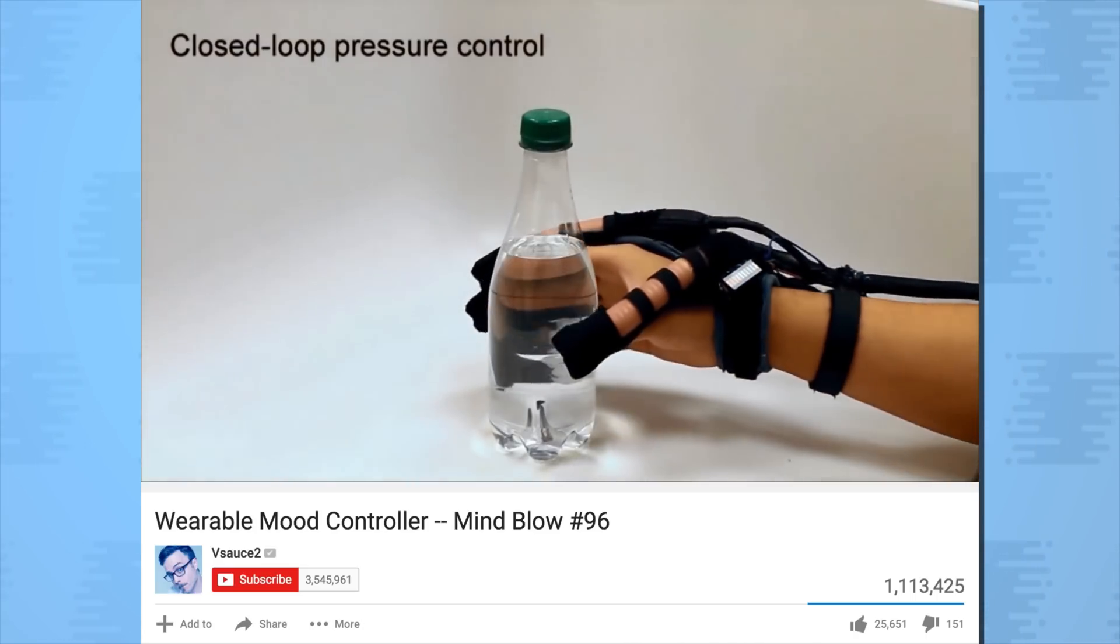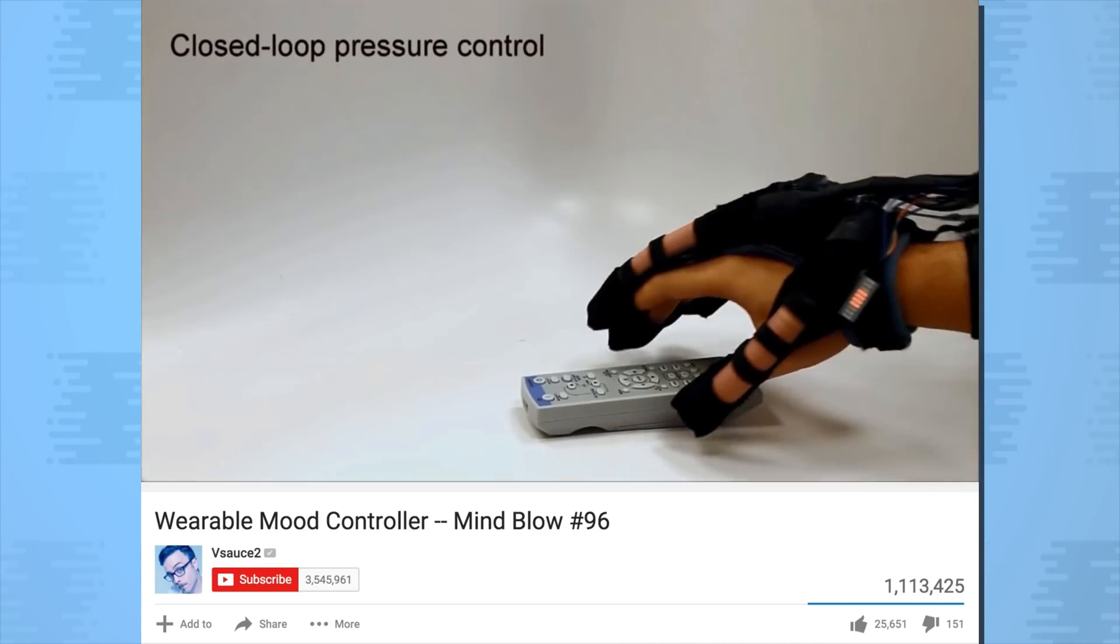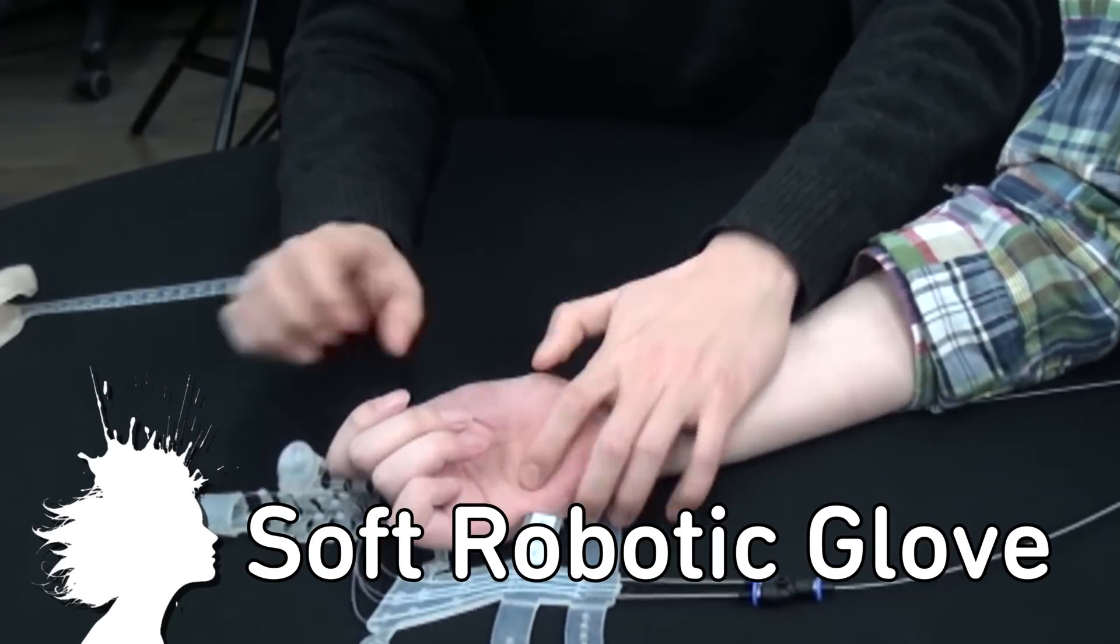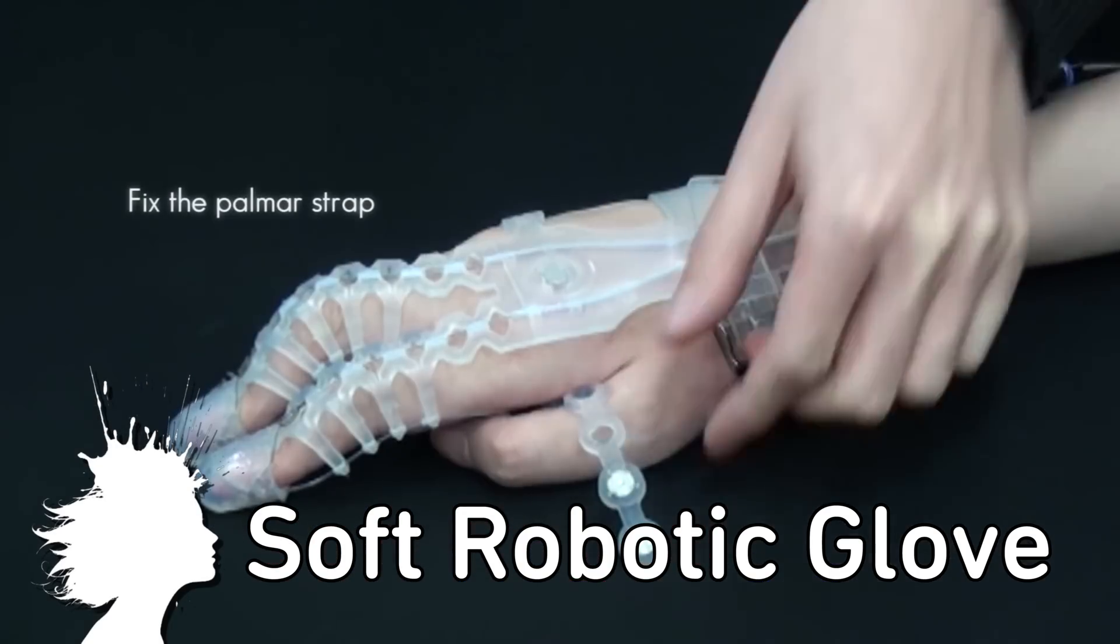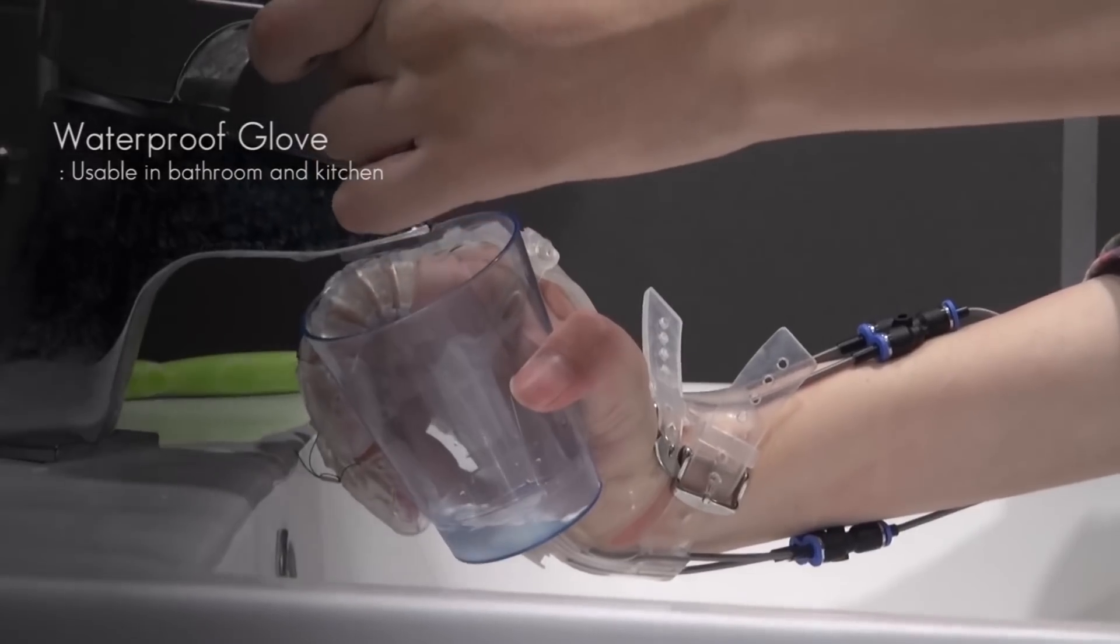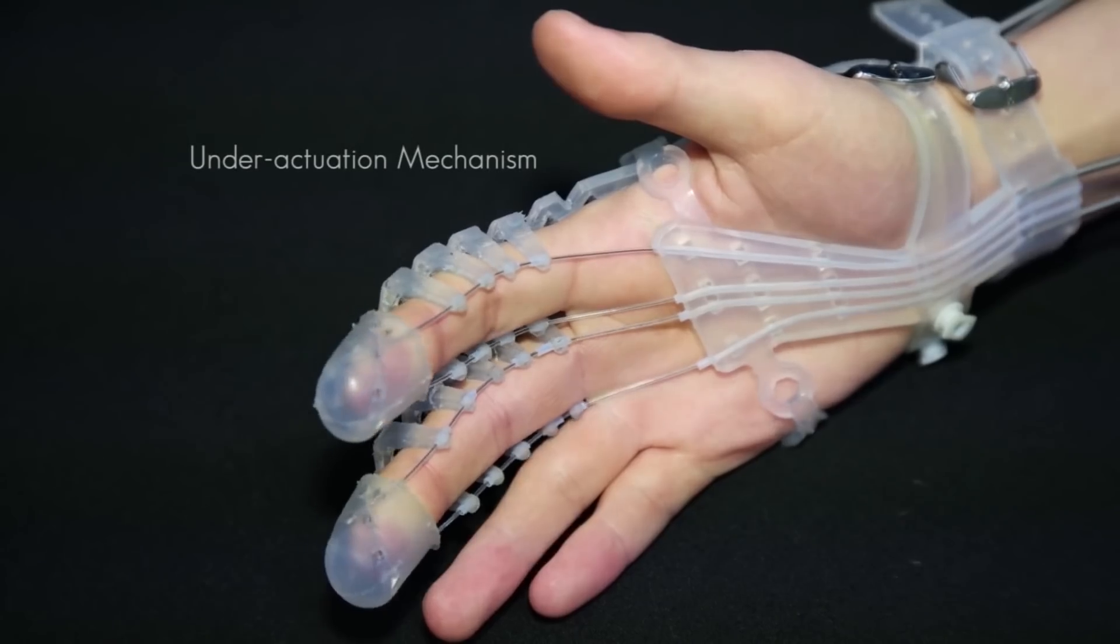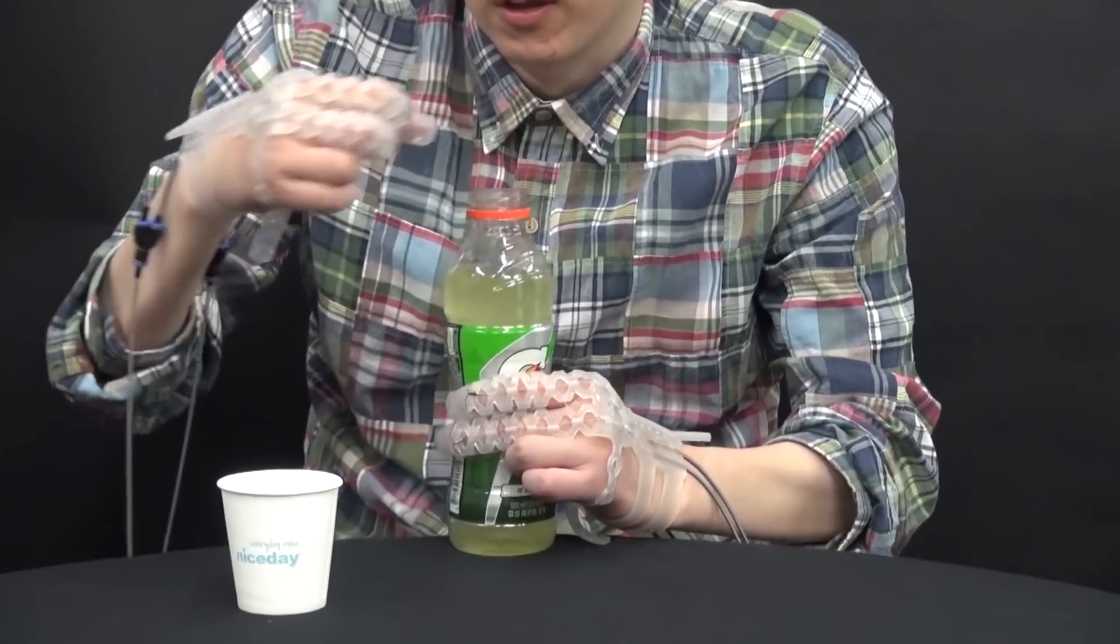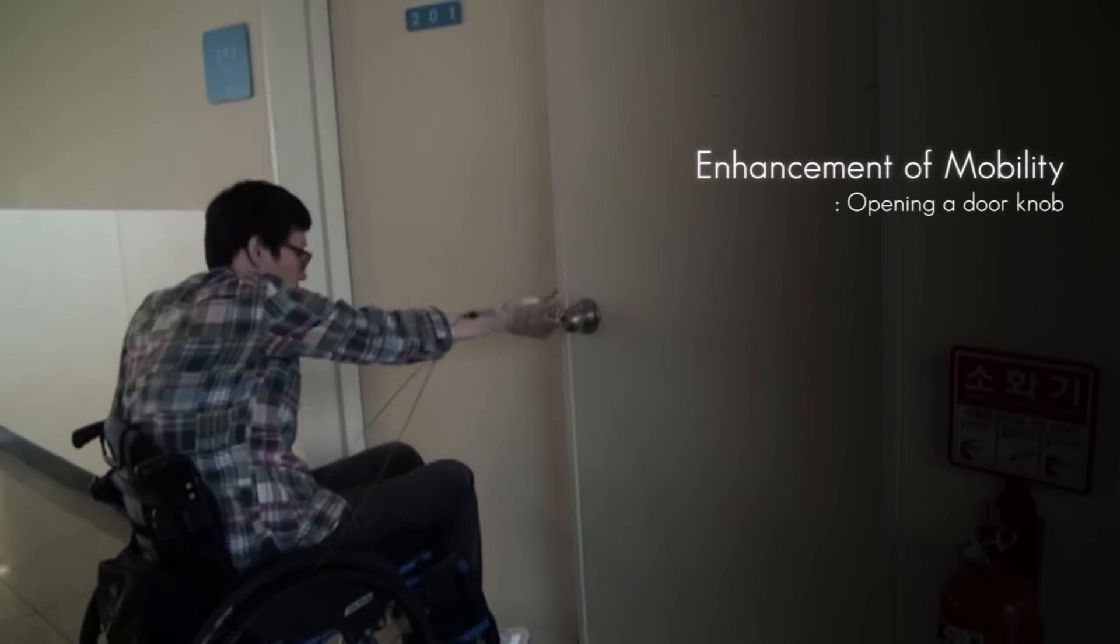I featured a soft wearable robotic glove in Mindblow 96 developed at Harvard, but this new exo glove from Seoul National University is more compact and more comfortable. The flexible waterproof polymer soft robot is tendon driven using actuators and allows grasping of various objects for people with hand disabilities.